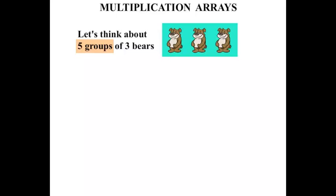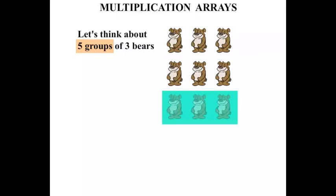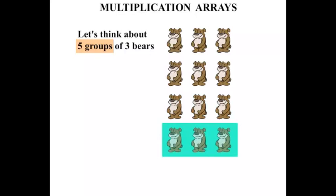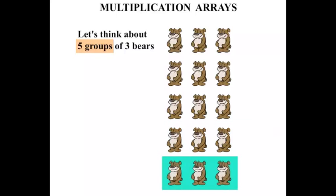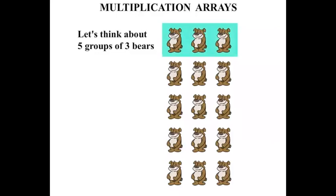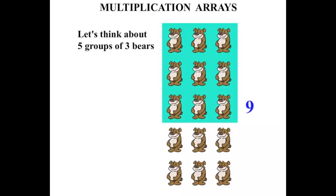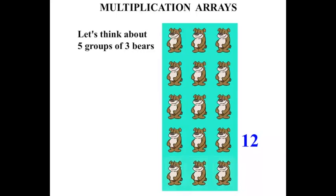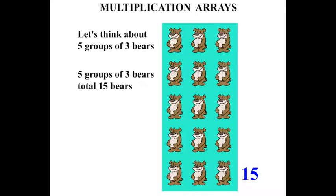There's one group, two groups, three groups, four groups, five groups. So we've got five groups of three bears. Now let's count them all together. We have three so far. Another three makes six. Another three makes nine. Another three makes twelve. Another three makes fifteen. So five groups of three bears total fifteen bears.